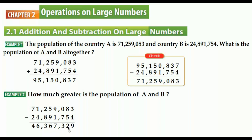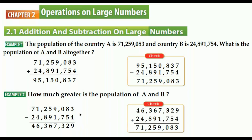We can also check subtraction by adding. The top number in the subtraction is called the minuend, the bottom number is the subtrahend, and the result is the difference. To check, we write the difference — 46 million 367 thousand 329 — and add the subtrahend — 24 million 891 thousand 754 — to try to get back the top number.